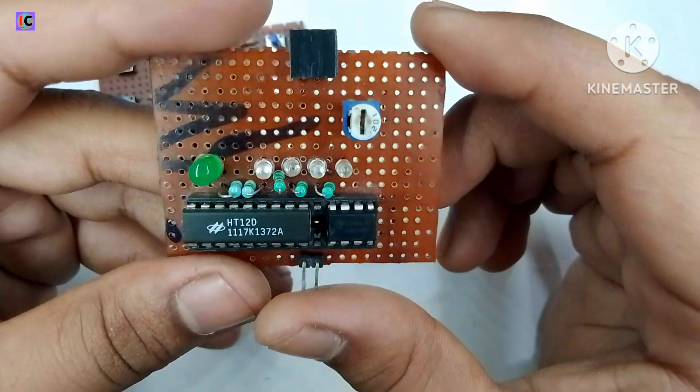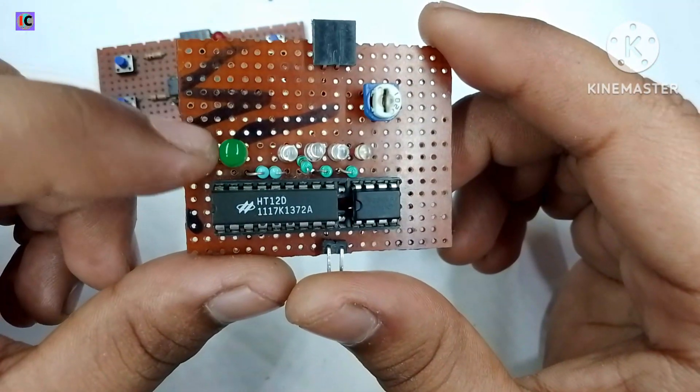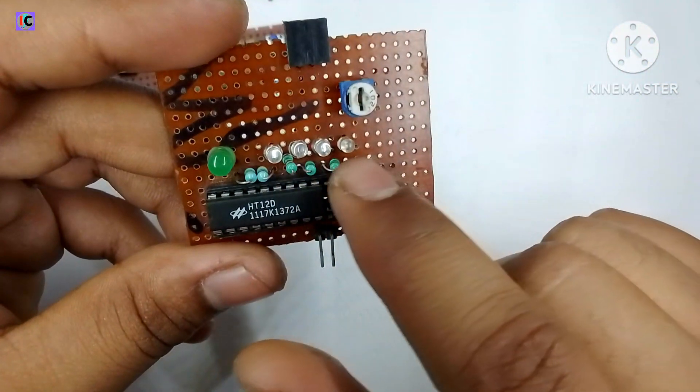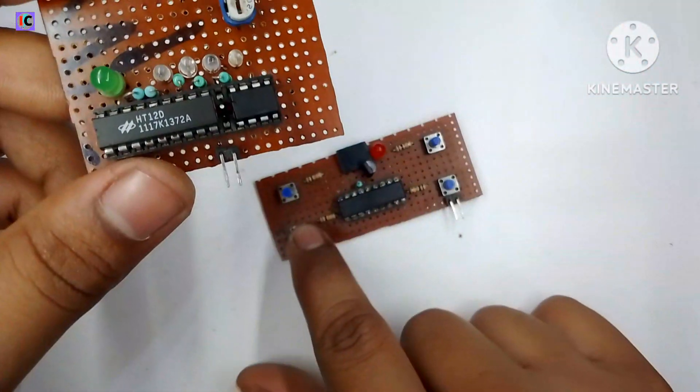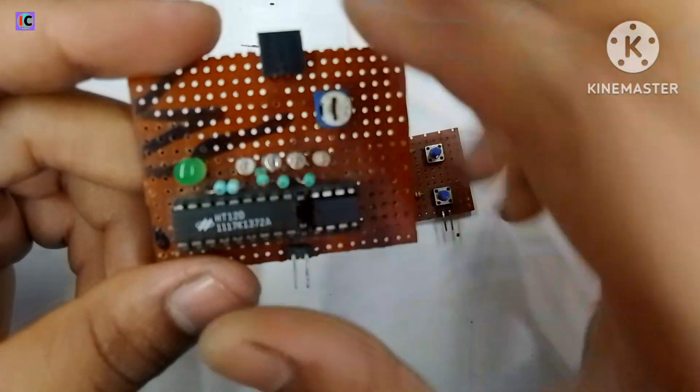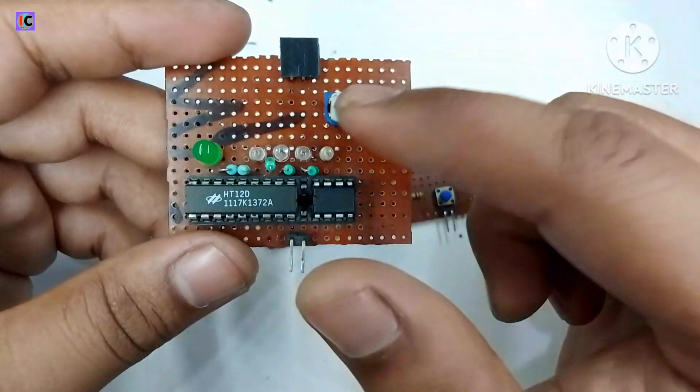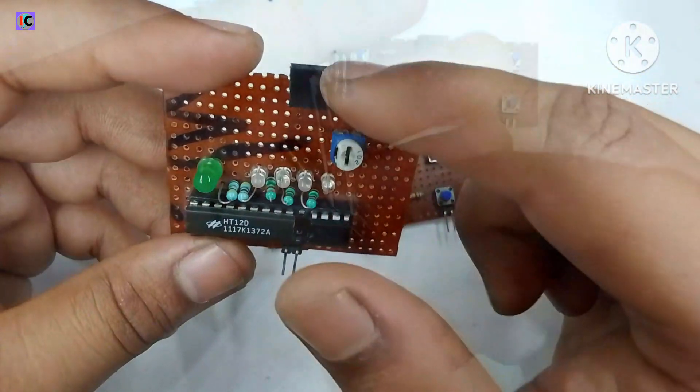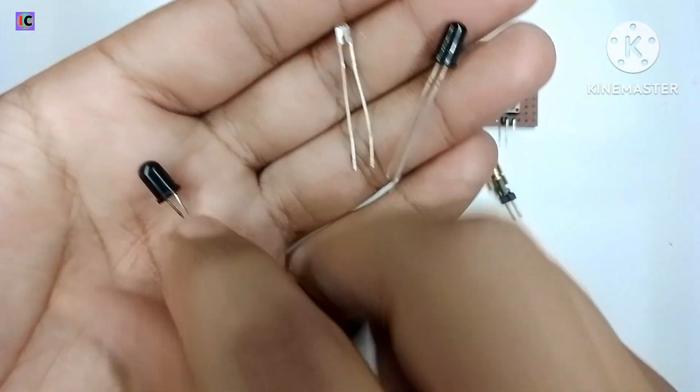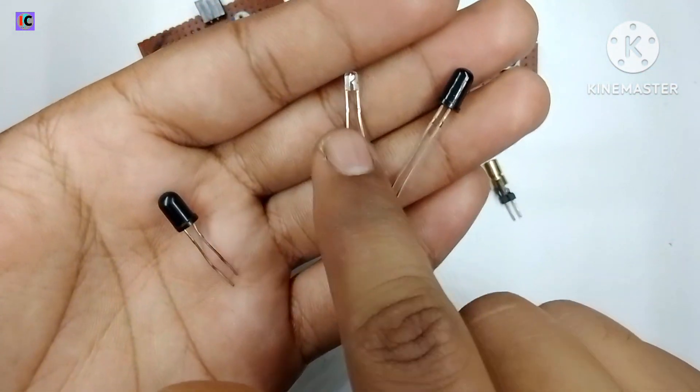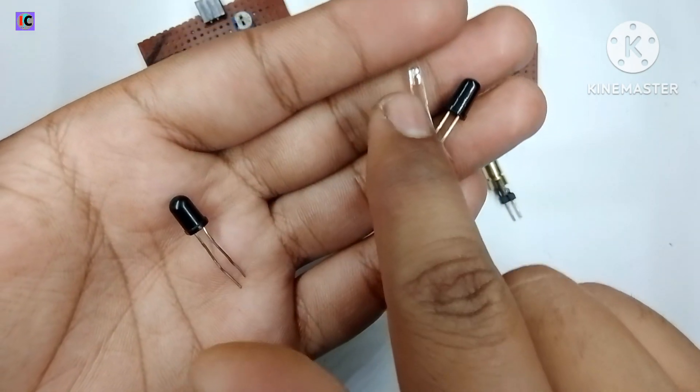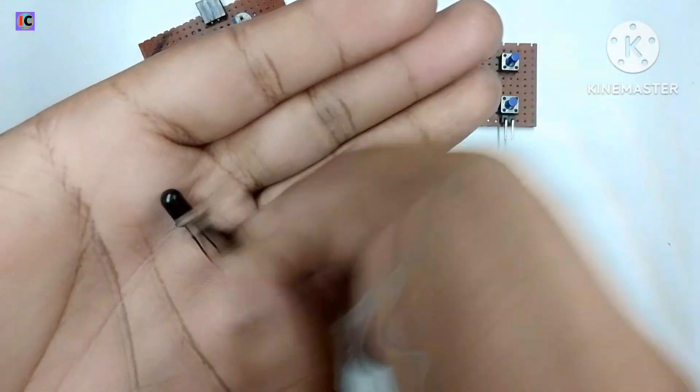For the amplification of the incoming signal I have used LM358. The green LED will indicate the connection between both modules and the 4 LEDs are used for the output of the module. This 10k potentiometer will control the accuracy and here these are the different kinds of IR receiver and photo diodes.